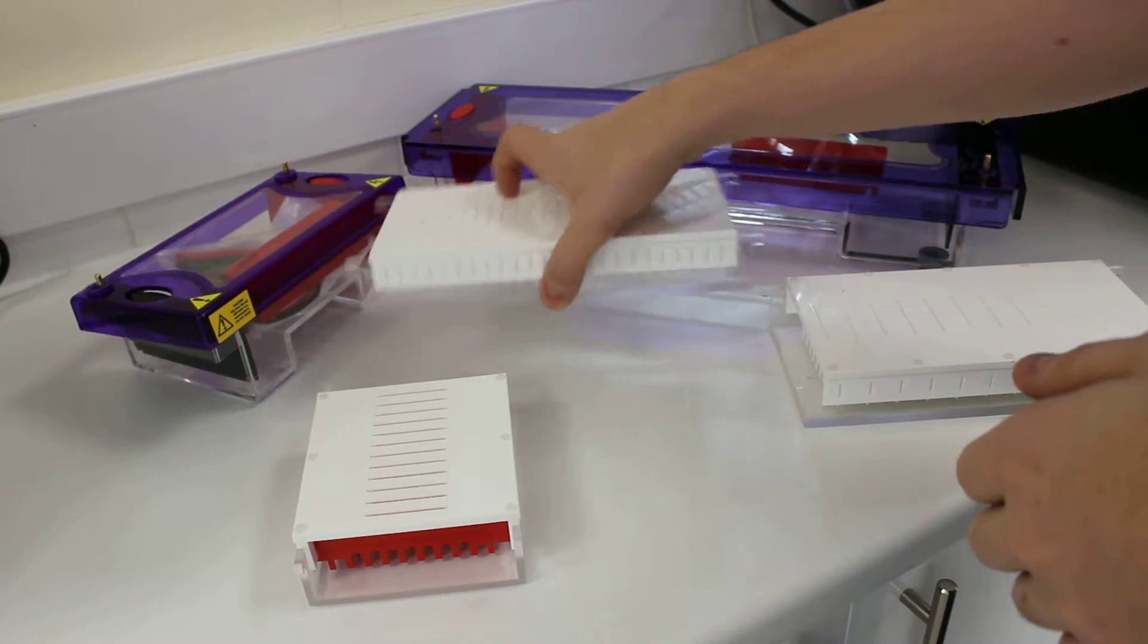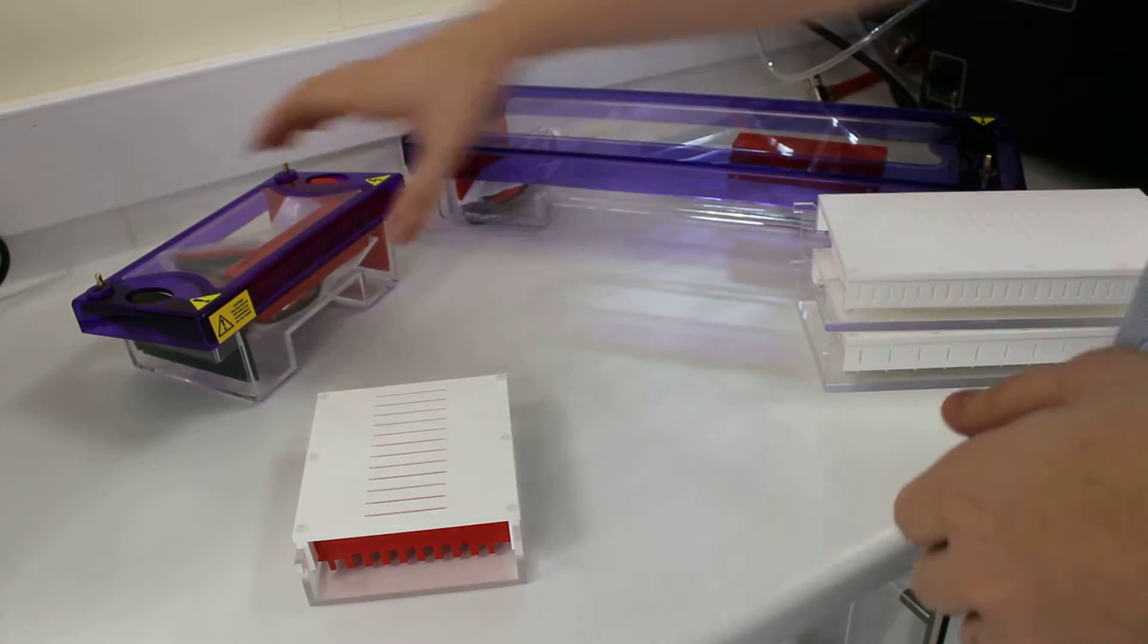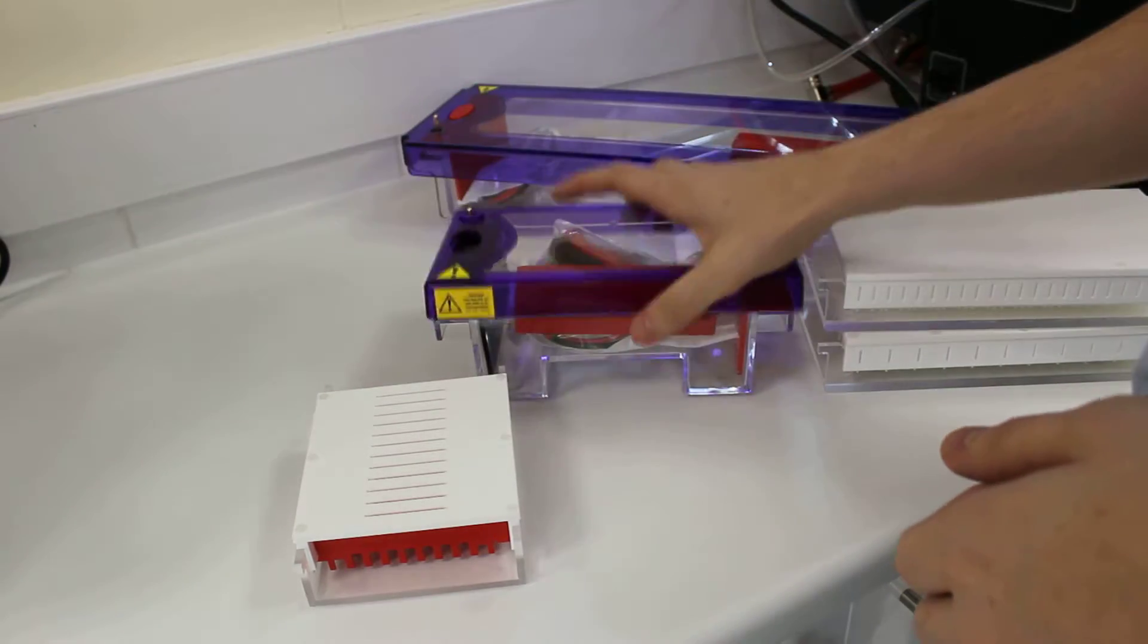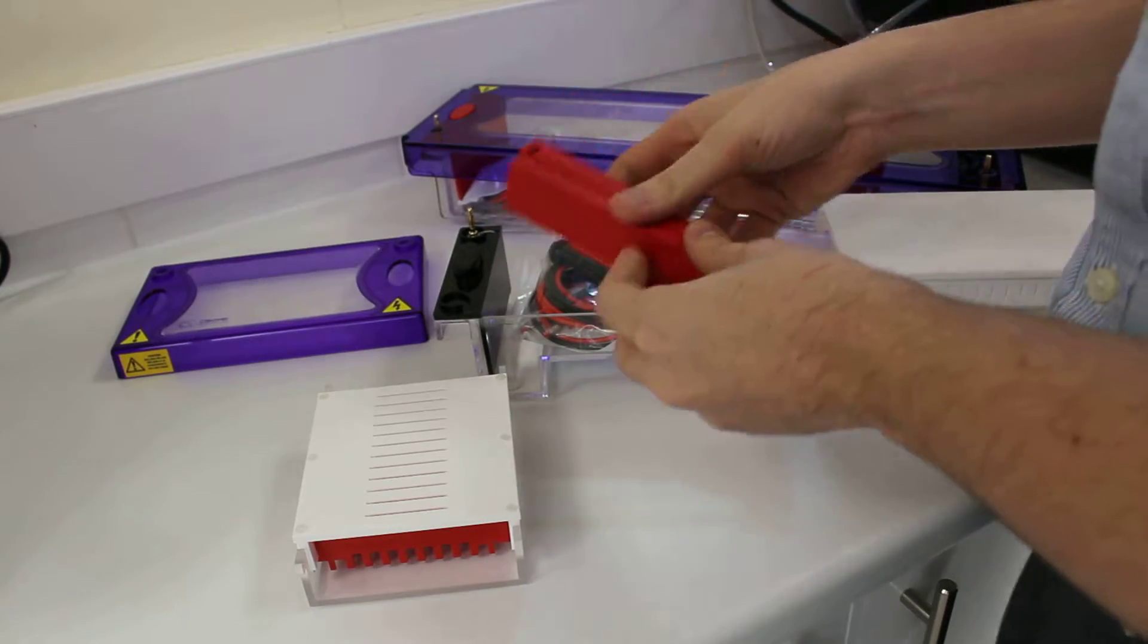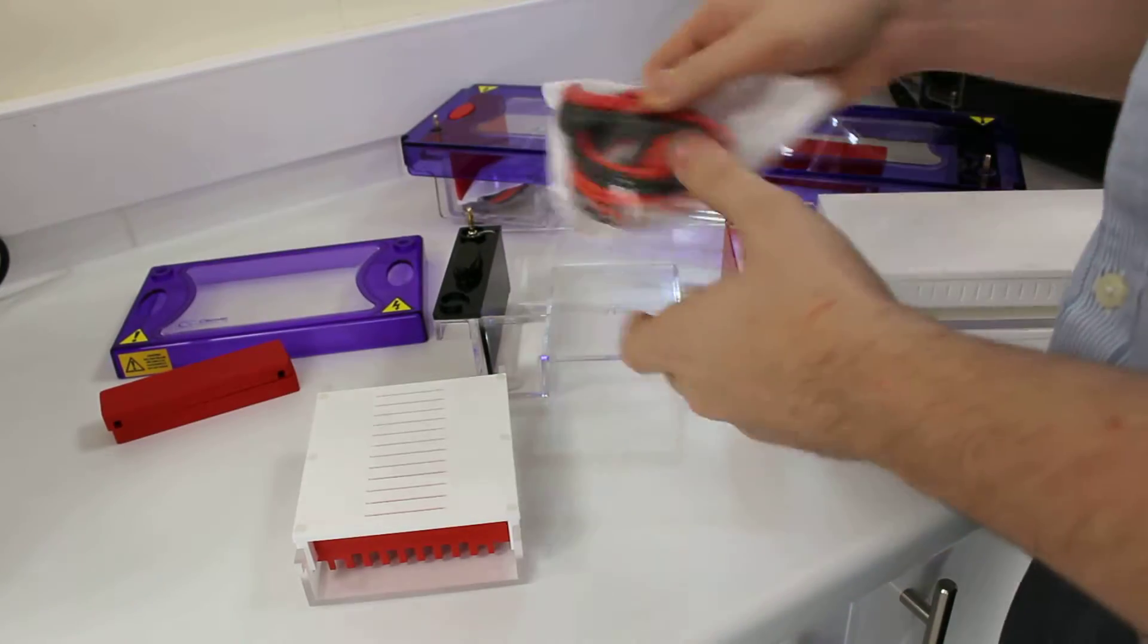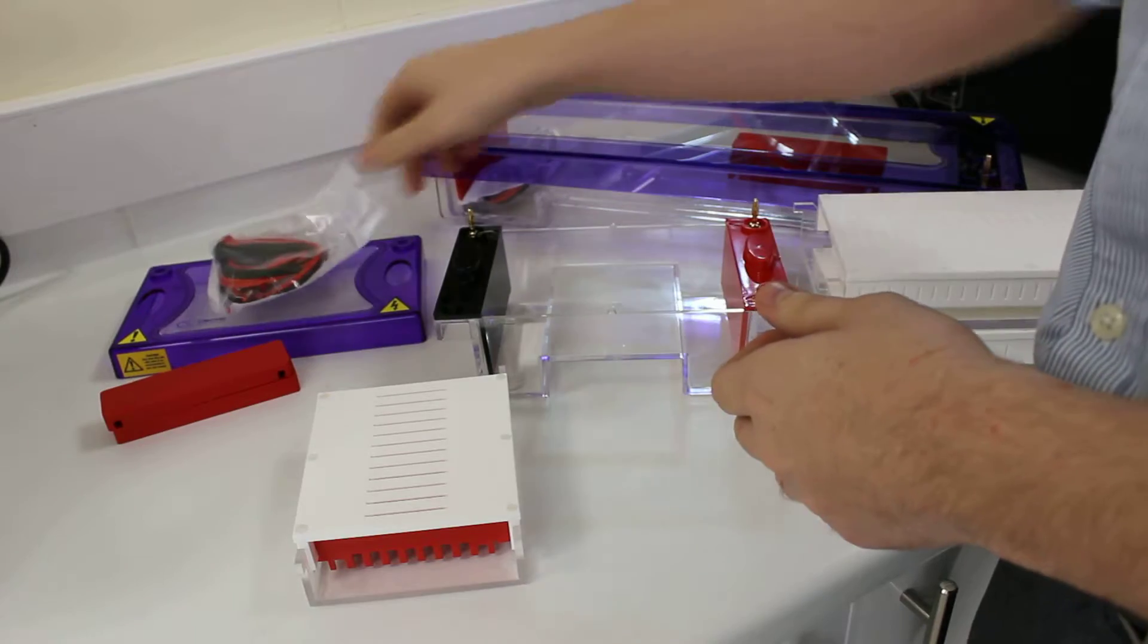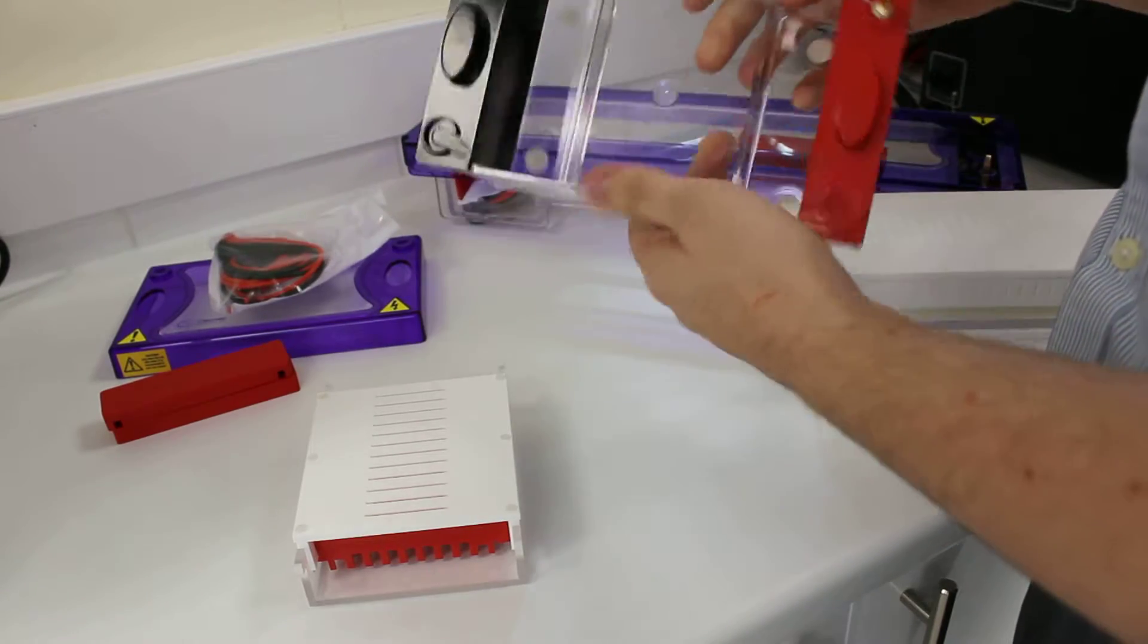The smaller one is the MS-MIDI-96. You get the MS-MIDI tank with the lid. These are the casting dams for casting the agarose gel. The electrodes connect to the lid and then the tank with the platinum wire electrodes at the bottom.